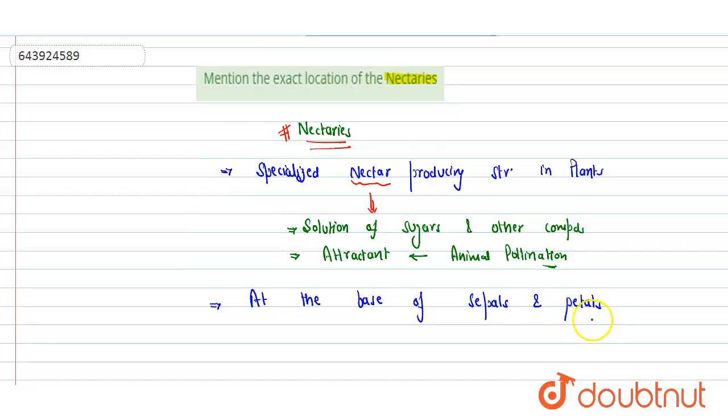These are present at the base of sepals and petals. Sepals are called sepal nectaries while petals are called petal nectaries. So in the question they have specifically asked to mention the exact location, so we can see that the exact location is at the base of sepals and petals. Hope you get it, thank you.